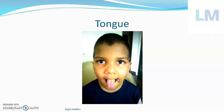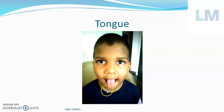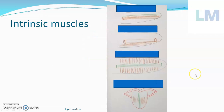Let us start with the tongue as such. It has got an attached position which is called the root, and this is the tip of the tongue. There are two lateral borders. The upper surface is called the dorsal surface and the lower surface is called the ventral surface.